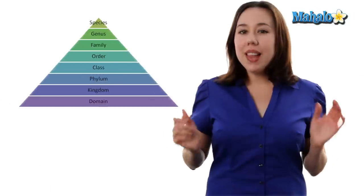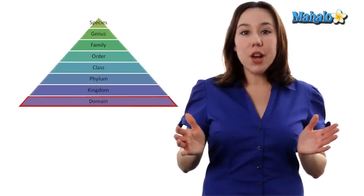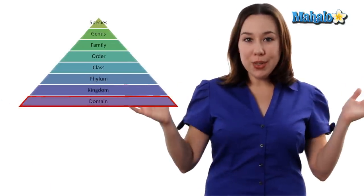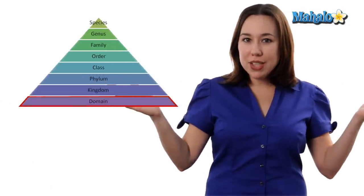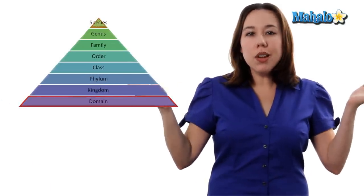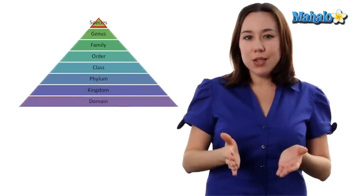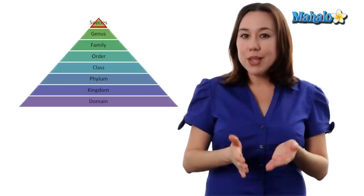Well, it's the same way with taxonomic classification. Scientists like to put things in order so that we can talk about it with one another and understand the relationships that these organisms have. When classifying organisms, we're going to start at the most inclusive or the biggest group and whittle our way down to the smallest, or the species.